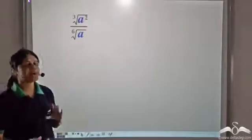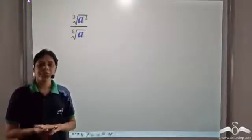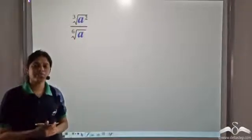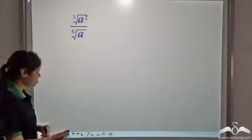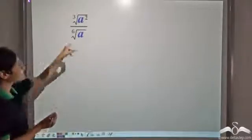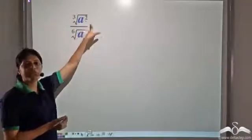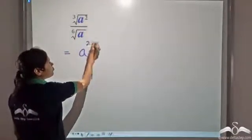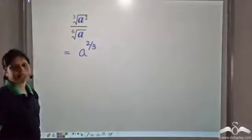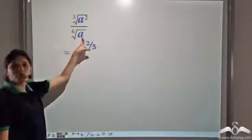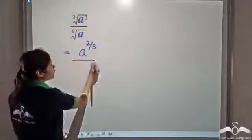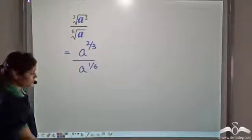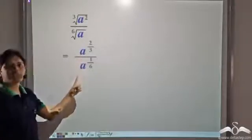We need to simplify this expression. We know that such expressions can be expressed as exponentials. So let us do that. Cube root of a square is equal to a to the power 2 by 3. Sixth root of a is equal to a to the power 1 by 6. So this is what we have.